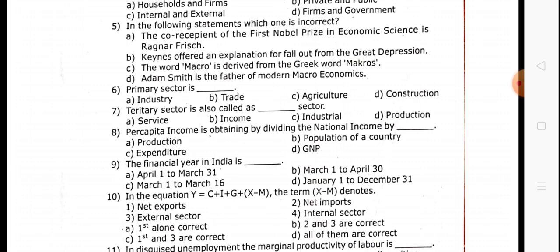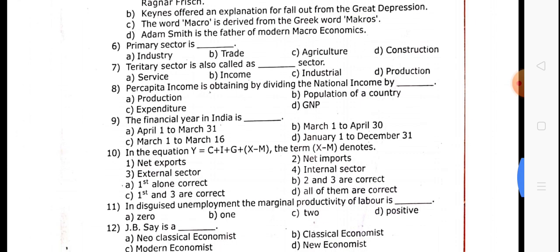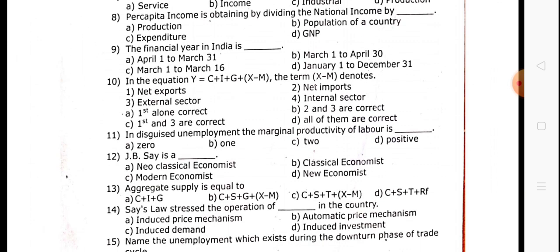Primary sector, secondary sector, and territory sector — also called obligated. Next, question 8: per capita income is obtained by dividing national income. Per capita income is also called obligated. Question 9: the financial year in India — the financial year runs from the 1st April to the 31st March.